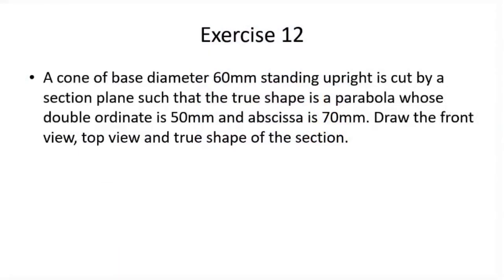This is the last exercise in the sections of solids. The question is: a cone of base diameter 60 millimeters standing upright is cut by a section plane such that the true shape is a parabola whose double ordinate is 50 millimeters and abscissa is 70 millimeters. Draw the front view, top view, and the true shape of the section.